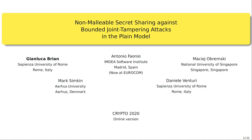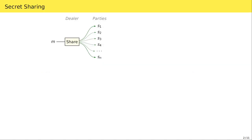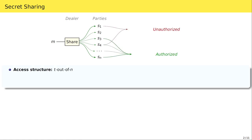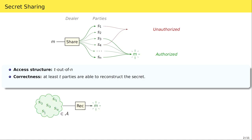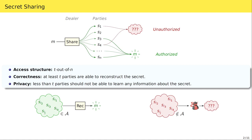Secret sharing is a cryptographic primitive in which a dealer wants to share a secret message among N parties so that only certain subsets of parties are able to reconstruct the message. In this talk I'll only consider T-out-of-N secret sharing, though in our paper we consider more general access structures. The correctness property states that T or more parties can reconstruct the message, while the privacy property states that fewer than T colluding parties cannot learn any information about the secret.